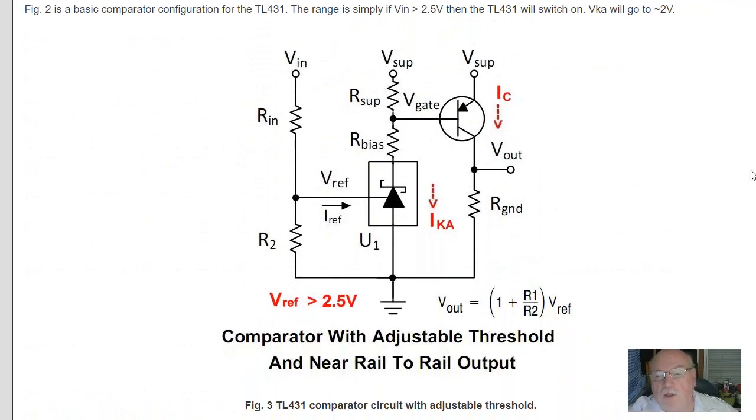Briefly again, you can use a PNP transistor tied into the TL431. And in this configuration, when the VIN voltage exceeds the V-reference voltage, U1 will switch on. This creates a current through R bias that creates a current through the emitter base junction of this transistor. And the output switches to V supply.